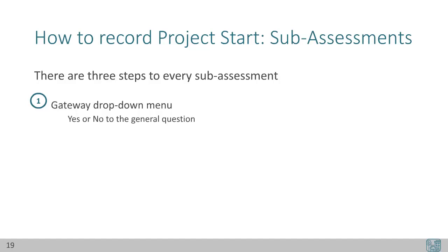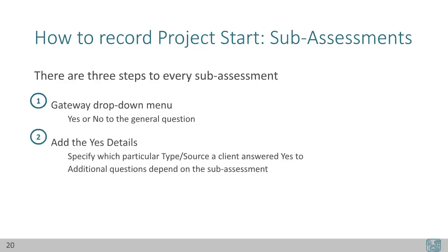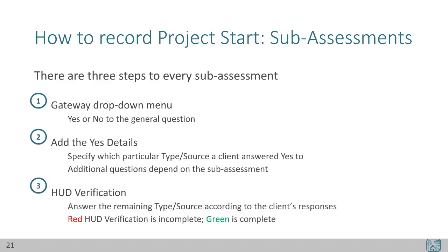Once starting a sub-assessment, identifiable by that detail table, complete as much information as possible. There are three steps to every sub-assessment. One, a gateway drop-down menu — this is a yes or no response to the general question. Secondly, add the yes details: specify a particular type or source a client answered yes to; additional questions will depend on the sub-assessment. Disabling condition asks for details on disabilities, income asks for details about the dollar amounts, etc. Thirdly, complete the HUD verification: answer the remaining type or source questions according to the client's responses. Red means the HUD verification is incomplete, while green is complete. These recommended three steps make sure that nothing is accidentally missed and avoids common mistakes.